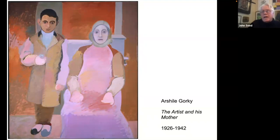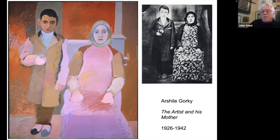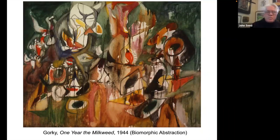Gorky began as an artist obsessed with Cézanne, and also obsessed with memories of his childhood. When he came on the ship he brought a photo of himself and his mother — one of the few things he had from his childhood — and he painted this image obsessively. I think there are two finished versions of this canvas; this one he worked on for over 15 years. That brought him up to speed with a French style, with the work of Cézanne.